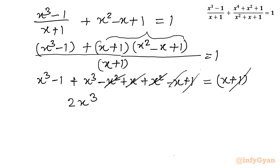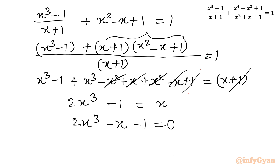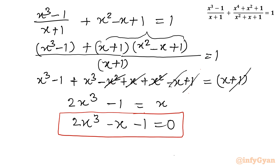What is left gives us 2x³ - 1 = x. Taking all terms to one side: 2x³ - x - 1 = 0. This is a cubic equation, which we can solve using the synthetic division method or factorization. Let us use factorization here.